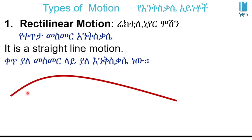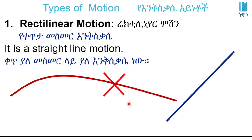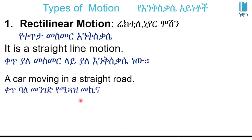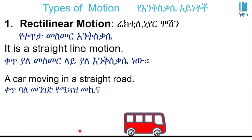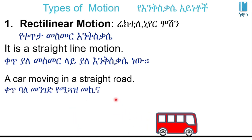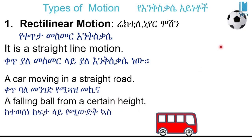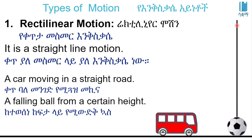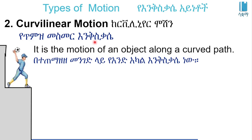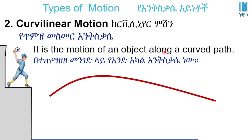If you want to move a ball from a straight road, you can move the ball from a certain height. Curvilinear motion is when the motion of an object occurs in a curved direction.